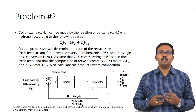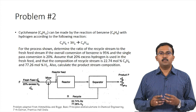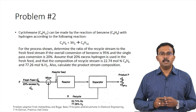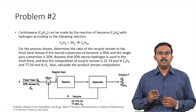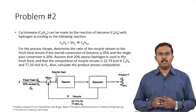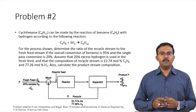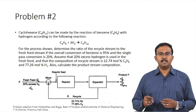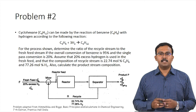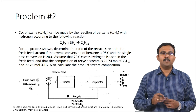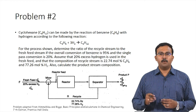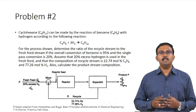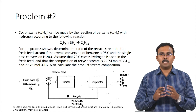In the previous tutorial we looked at a system with recycle but without reaction. Now we will solve a problem with both reaction and recycle. Cyclohexane can be made by the reaction of benzene with hydrogen: benzene + hydrogen → cyclohexane. Determine the ratio of recycle stream to fresh feed if the overall conversion of benzene is 95% and single pass conversion is 20%. Assume 20% excess hydrogen in the fresh feed, and the recycle stream is 22.74 mol% benzene and 77.26 mol% hydrogen.